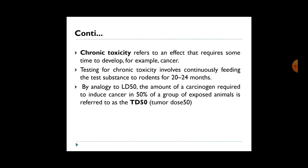The next term is chronic toxicity. It refers to effects that require some time to develop — for example, cancer. Testing for chronic toxicity involves continuous feeding of test animals, typically rodents, for 20 to 24 months. For determining chronic toxicity, the TD50 value — tumor dose 50 — is required, defined as the dose needed to induce cancer in 50% of the group of exposed animals.